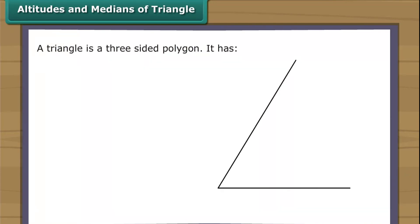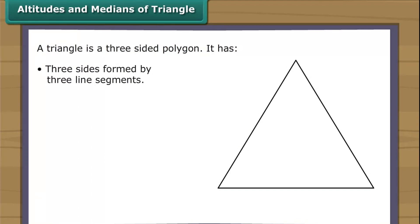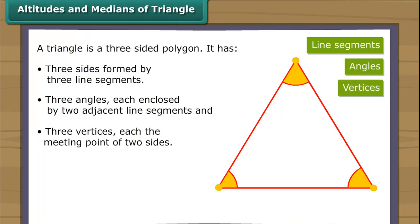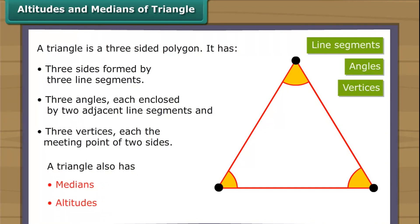A triangle is a three-sided polygon. It has three sides formed by three line segments, three angles each enclosed by two adjacent line segments, and three vertices — each the meeting point of two sides. A triangle also has medians and altitudes.